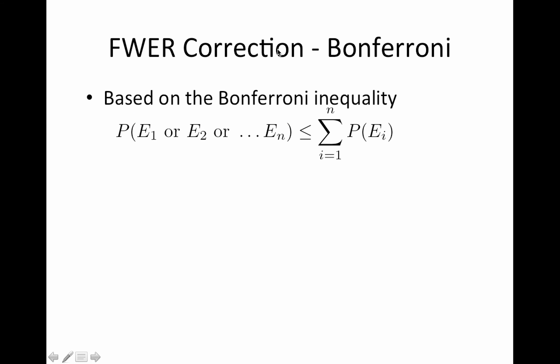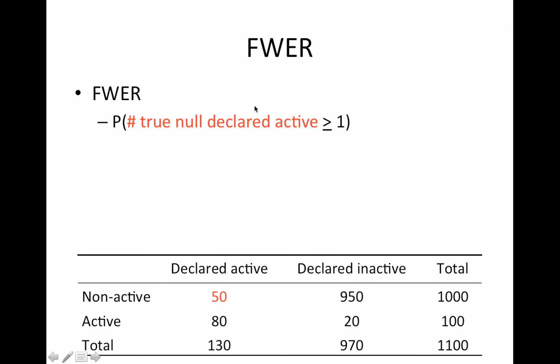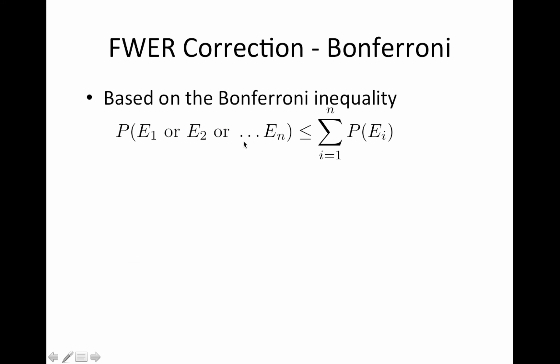So what does family-wise error rate look like, and how does Bonferroni relate to it? So this is the Bonferroni inequality. This left-hand side here is related to family-wise error rate because family-wise error rate is controlling the probability of having any false positives. So the probability if each of these events E1, E2 through EN was a null voxel being active, we're trying to control the probability of voxel 1 being active or voxel 2 being active or voxel N being active.